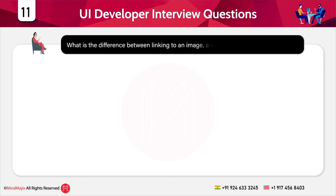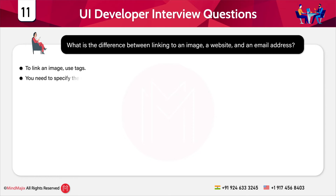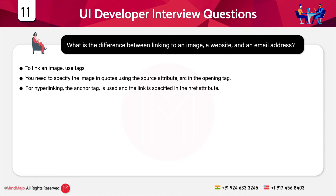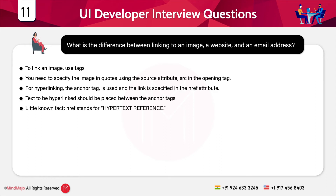The next question is: what is the difference between linking to an image, a website, and an email address? To link an image, you use the img tag and specify the image in quotes using the source attribute. For hyperlinking, the anchor tag is used and the link is specified in the href attribute — href stands for HyperText Reference. The text to be hyperlinked is placed between the anchor tags.